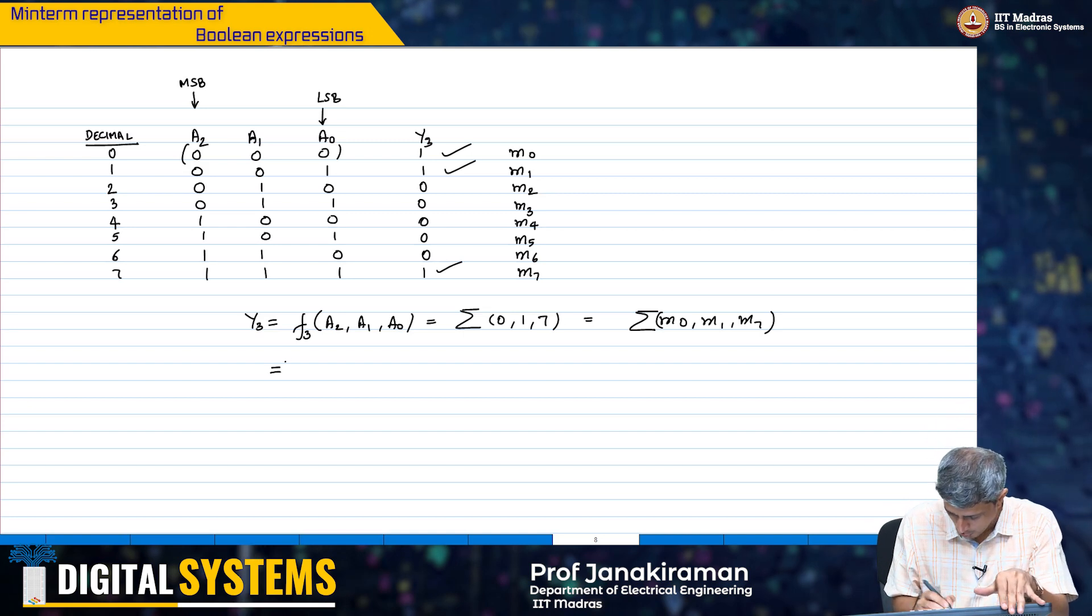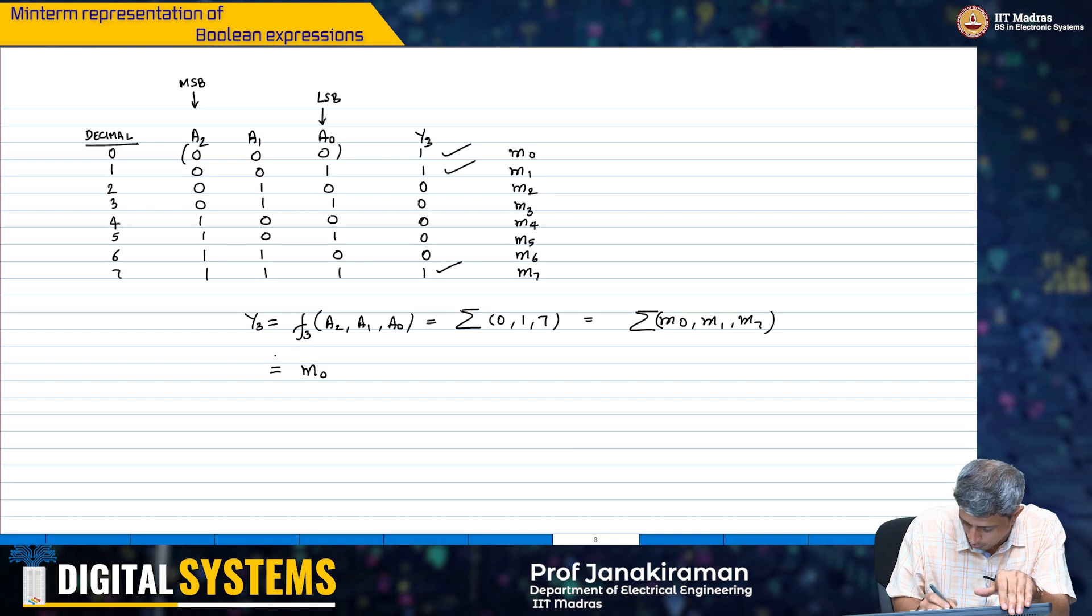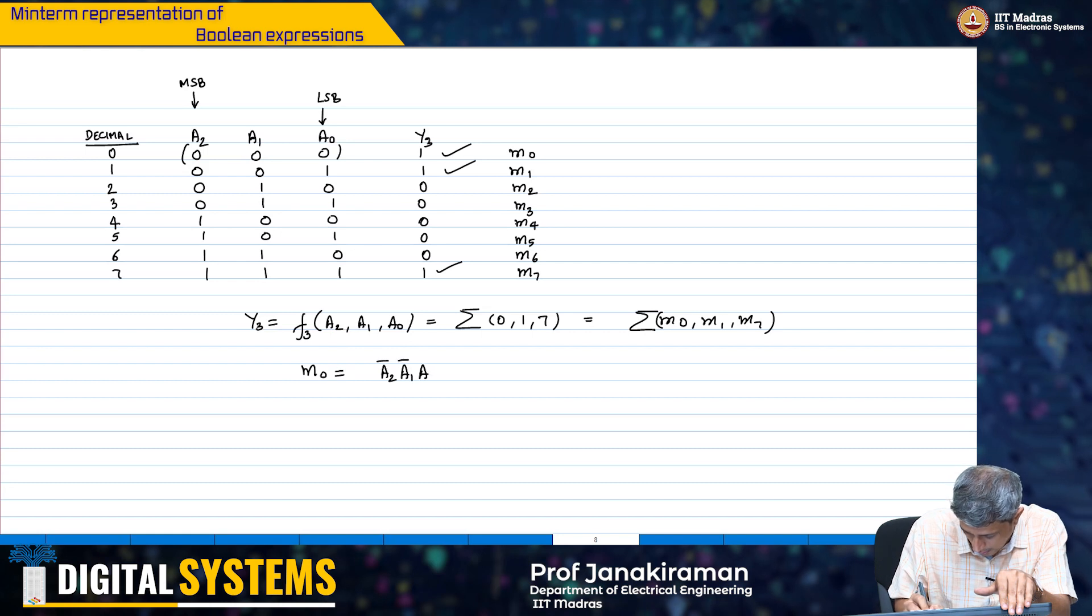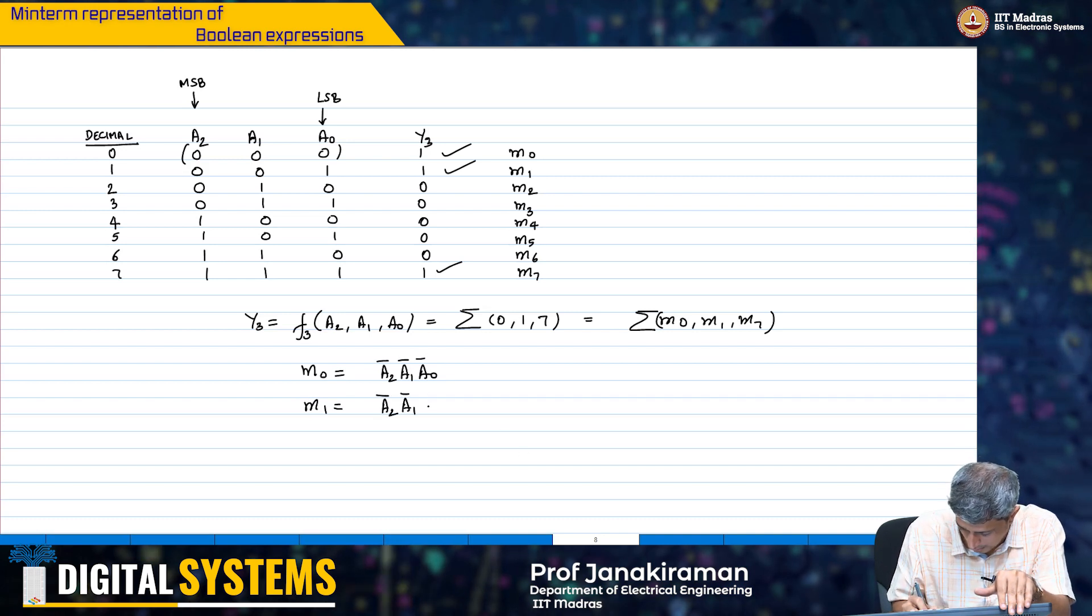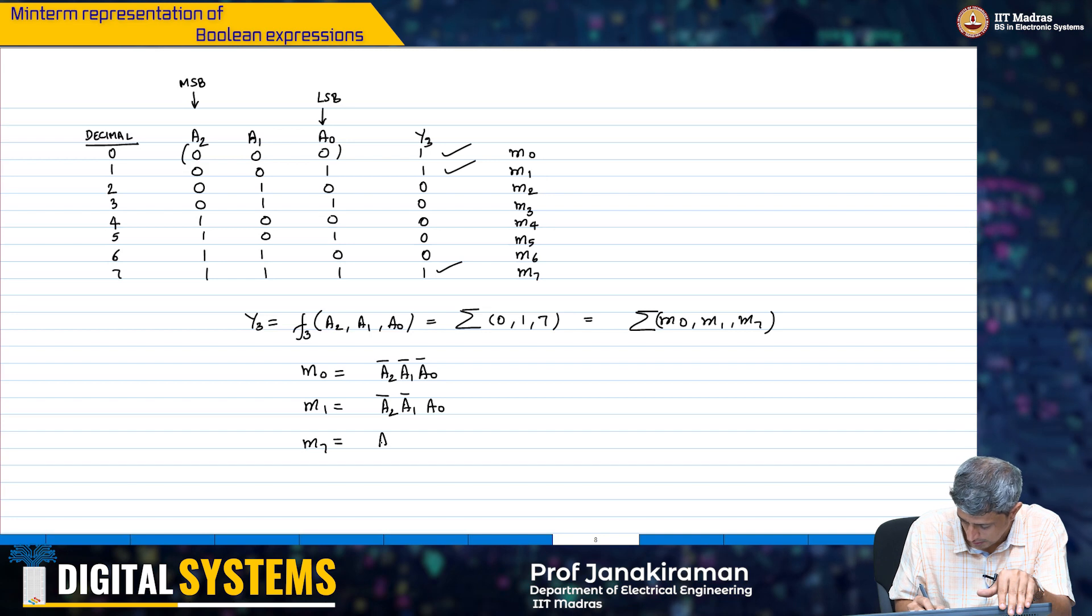So, let us simply look at what happens in this case. In this case, m0, the min term 0 is obviously a2 bar, a1 bar, a0 bar. m1 is a2 bar, a1 bar, a0. And m7 is obviously a2, a1, a0.